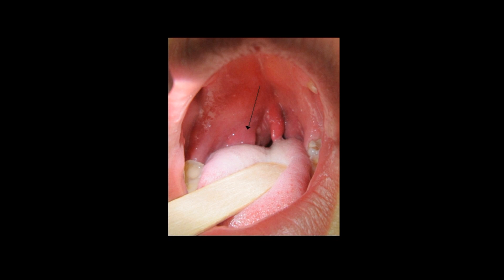Now for the step-by-step guide. First, spray the topical anaesthetic up the back of the throat around the area of the Quincy and wait several minutes for it to take effect. Then push the tongue out of the way using the tongue depressor and identify the most prominent part of the abscess. Inject about 2-3mls of anaesthetic into the mucosa using a 25 gauge needle. When the anaesthetic is injected at the correct depth, the mucosa should blanch — go a whitish colour — due to epinephrine-induced vasoconstriction.